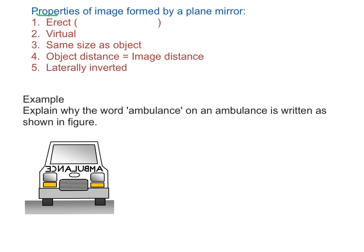The properties of the image formed by a plane mirror. First, erect image, means upright. Next, the image is virtual. Therefore, we use dotted line for the image. Next, the image is same size as the object. Fourth, the object distance is equal to image distance. That is, U is equal to V.